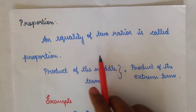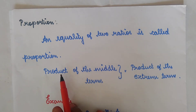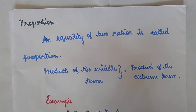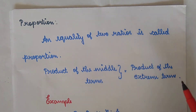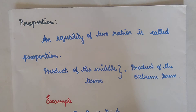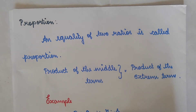Proportion is a statement of equality of two ratios. It is denoted by a symbol. We write P is to Q as R is to S.